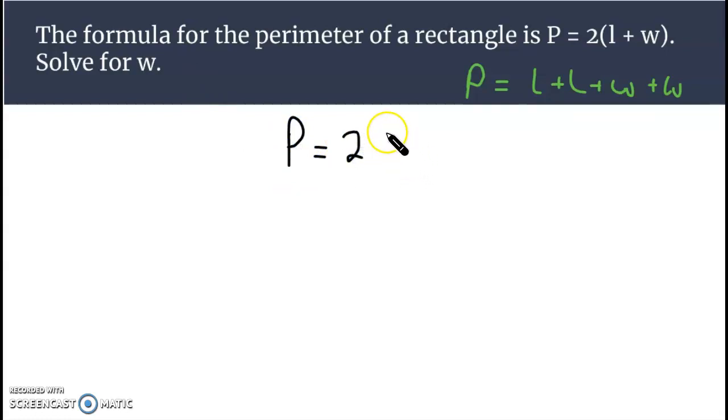What we're going to do first, notice what's happening to w - it's being multiplied by 2 outside of a parenthesis and we're also adding l. First thing, divide both sides by 2, get rid of that 2, so then we have P over 2 equals l plus w.